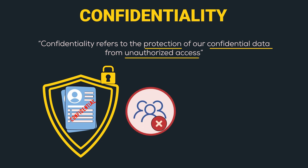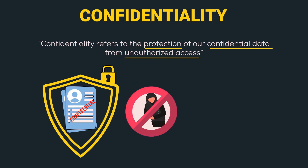This confidential data needs to be protected from unauthorized access. Unauthorized entities can be any general public that doesn't have the authority to access it, or any cyber criminal trying to steal the data. Confidentiality is required everywhere — organizations need to protect their business-critical information and trade secrets. In the military, concealment of sensitive information is a major concern since national security is at stake. Banks need to keep their customer information confidential as it is sensitive and can easily be misused.